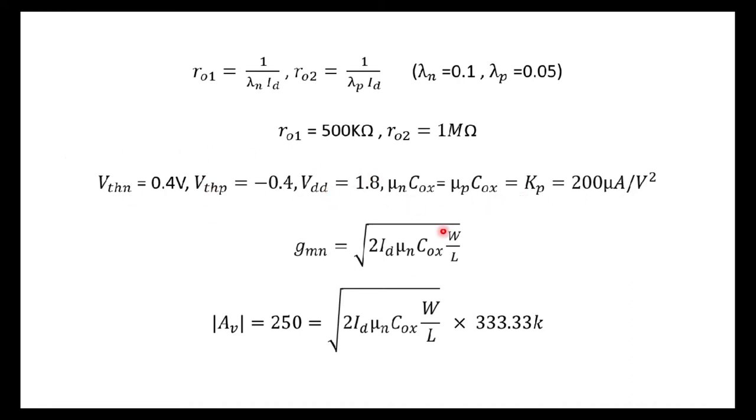So with these values, if I substitute in the gain, which is nothing but GMN times RO1 parallel RO2, the RO1 parallel RO2 will become 333.33k, and GMN can be written as square root of 2id mu n cox W by L. I have already told in the previous videos that GM has three different equations. Since we know id, we can use this equation. So square root of 2id mu n cox W by L and this value.